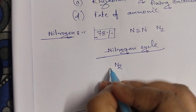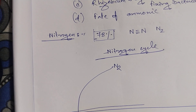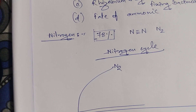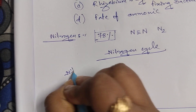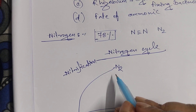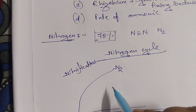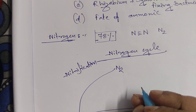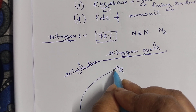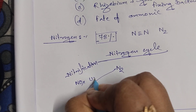The first step of the nitrogen cycle is the process by which nitrogen is converted to ammonia, which is called nitrification. This process takes place by various steps: abiological nitrogen fixation, industrial nitrogen fixation, and biological nitrogen fixation.